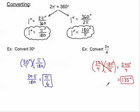That's pretty simple. There are two different conversion factors to convert from degrees to radians or radians to degrees.